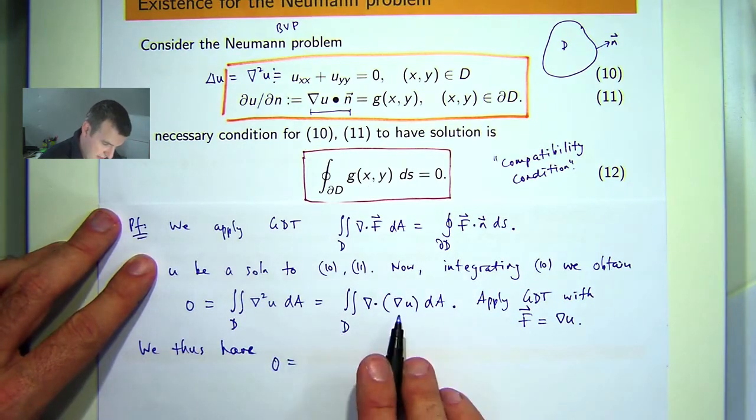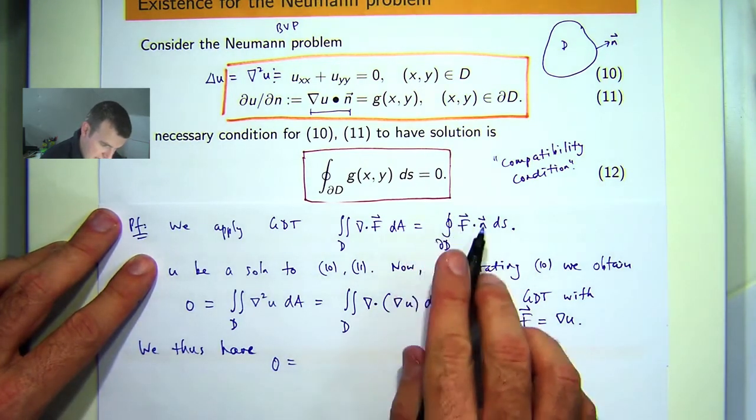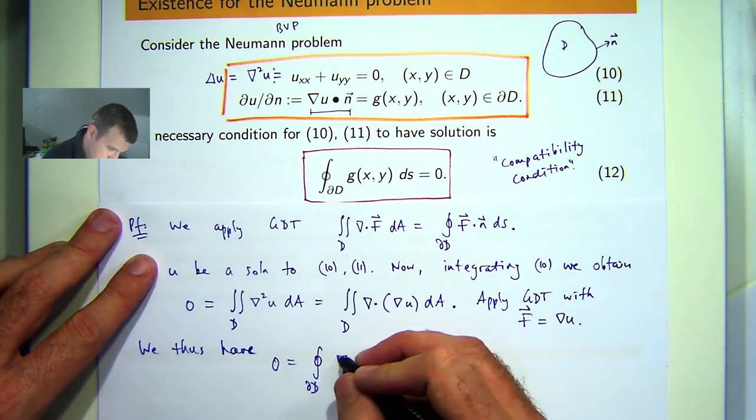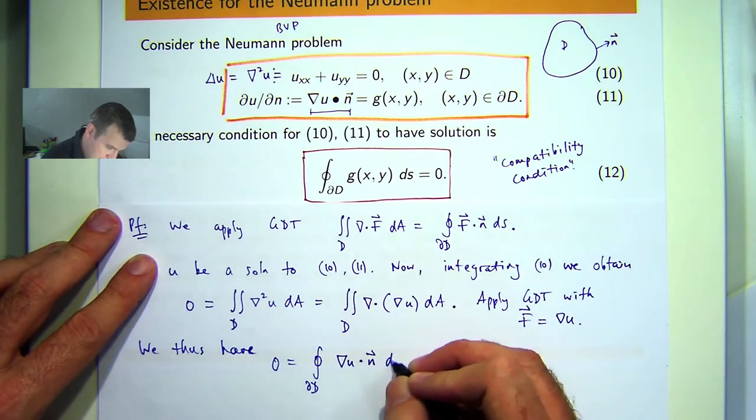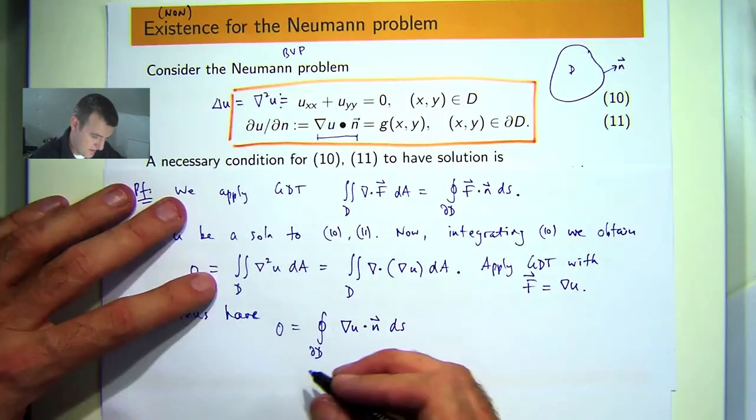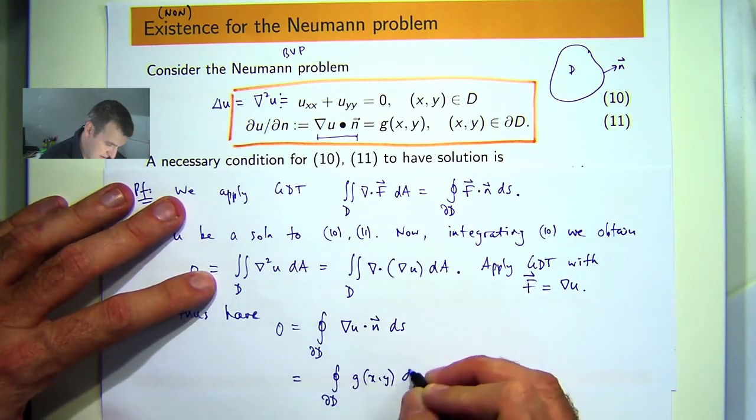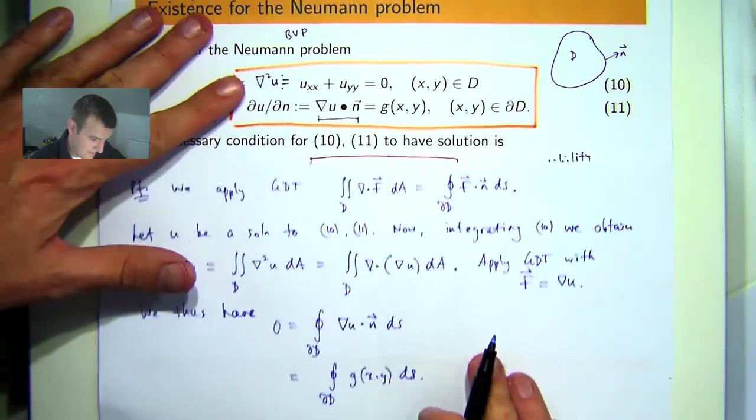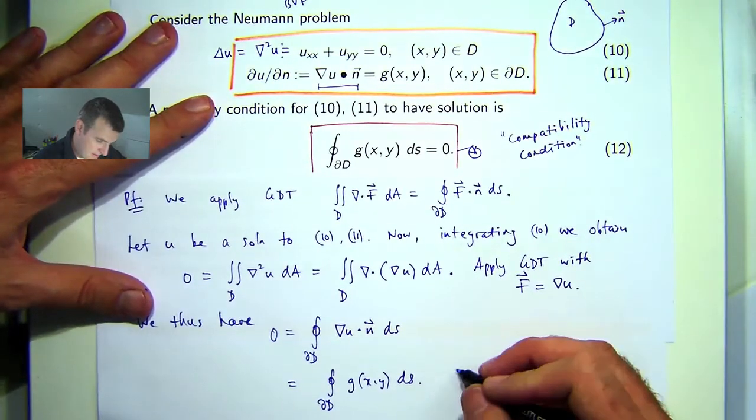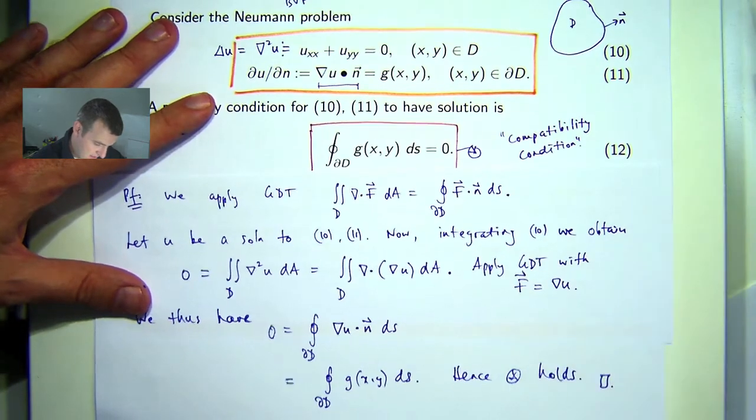We just have the following. We want to replace f with this in here. And what is this? Well from the boundary condition we know that this is g on the boundary of our set of interest. And this is what we wanted to come up with. Let's call this star. And that's the end of the proof.